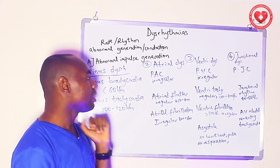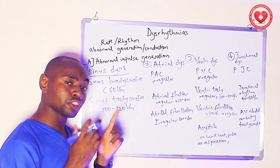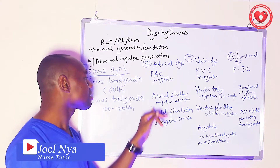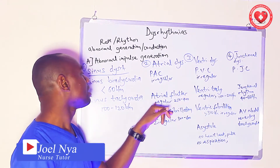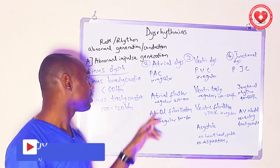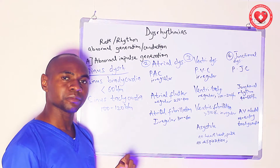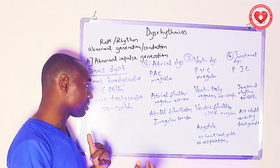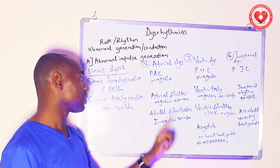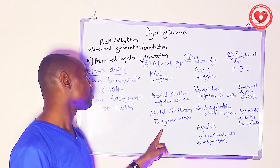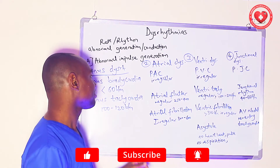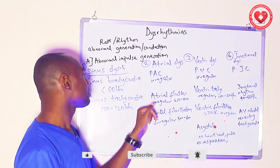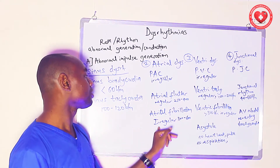Atrial flutter means the atrium releases electrical impulses more than normal — at a rate of 250 to 400 beats per minute — and the rhythm is regular. Atrial fibrillation is when the atrium releases impulses at a very fast rate of 300 to 600 beats per minute, but it is irregular. The major difference between flutter and fibrillation is regularity: flutter is regular, fibrillation is irregular.